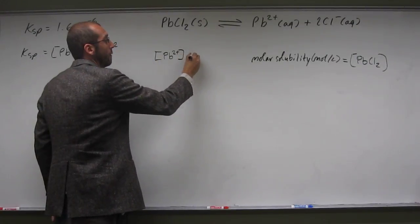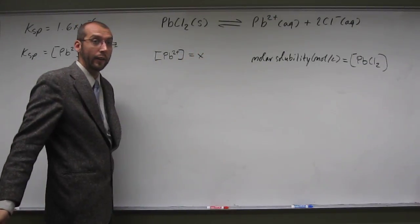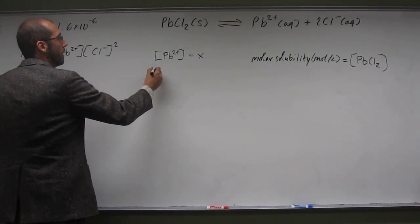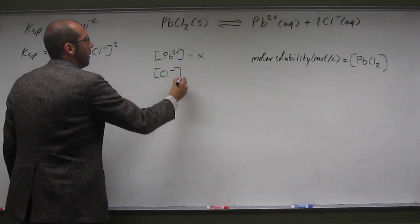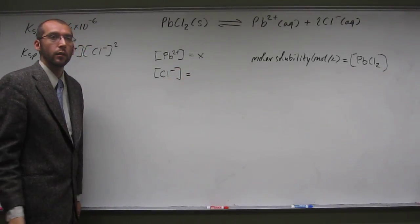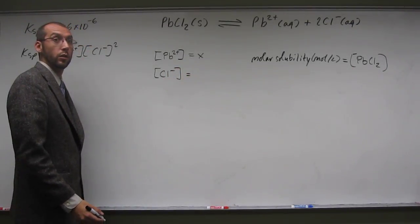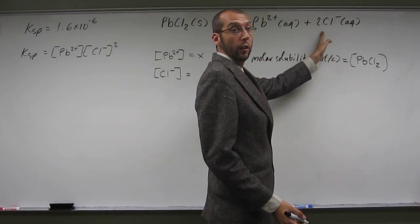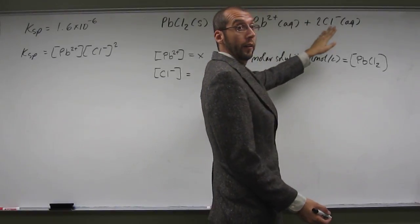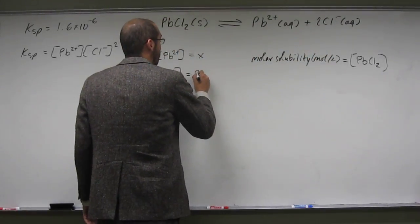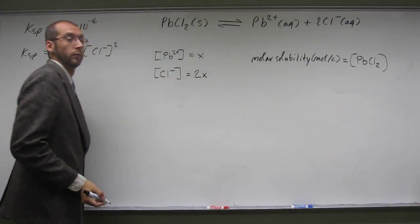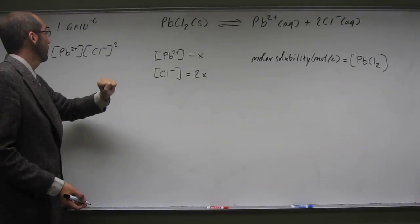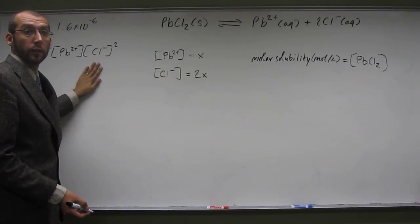So, the concentration of lead, if we just say that that's X, or whatever your favorite variable is. Concentration of Cl, what does that have to be? 2X, right? 2X. Where did you get that from? Well, you got it from the coefficient here. Because for every one lead, there's two of these. So, now we know those relative concentrations from the chemical equation, and we can plug them into this equation here.